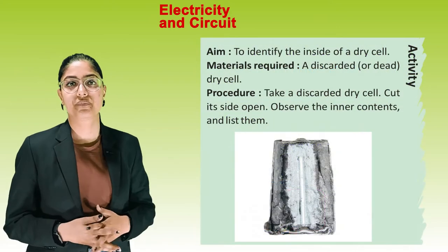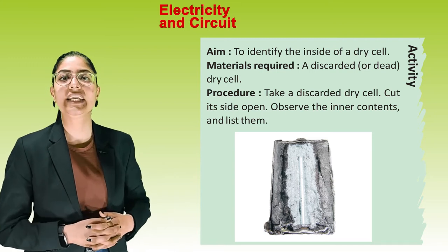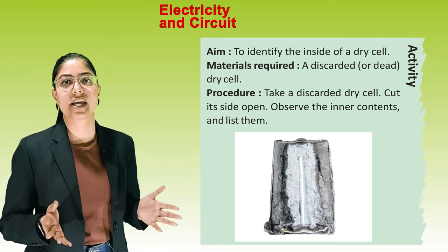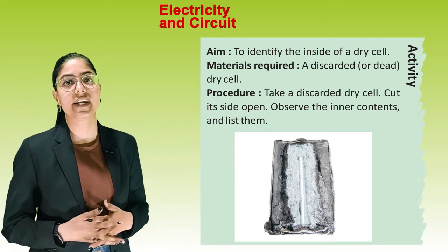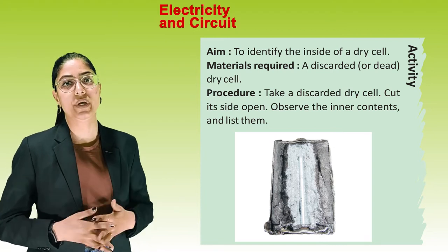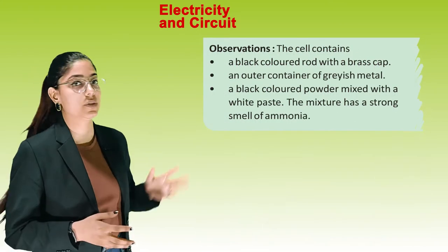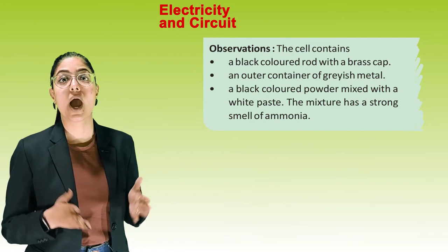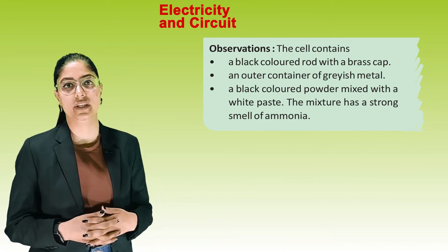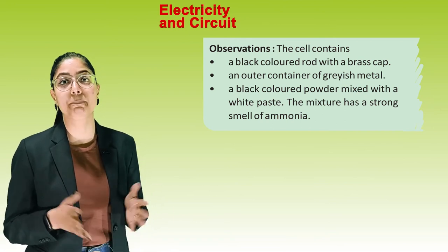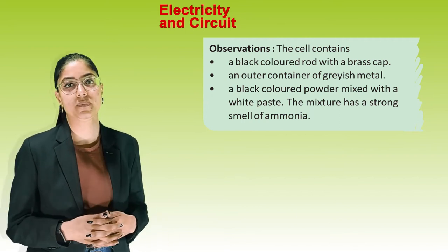Activity: to identify the inside of a dry cell. Material required: a discarded or dead dry cell. Procedure: take a discarded dry cell, cut its side open, and observe the inner contents. Observation: the cell contains a black-colored rod with a brass cap, an outer container of grayish metal, a black-colored powder mixed with a white paste, and the mixture has a strong smell of ammonia.